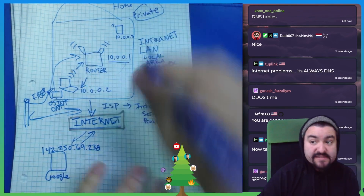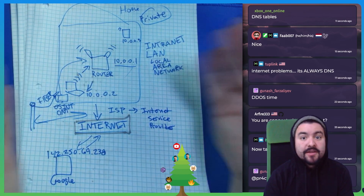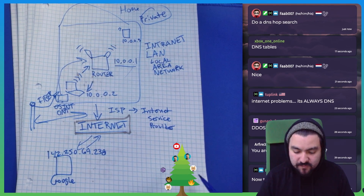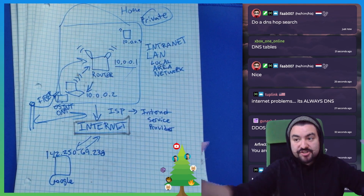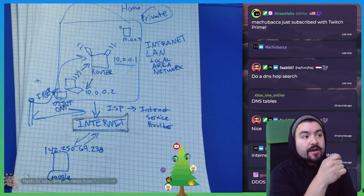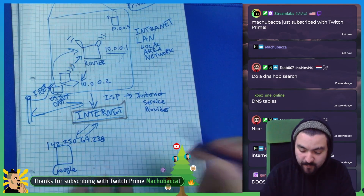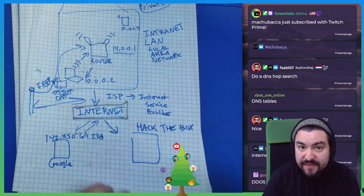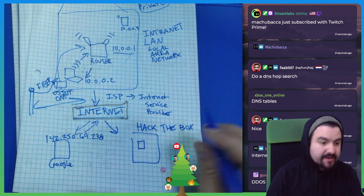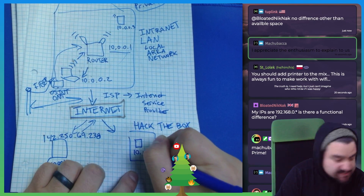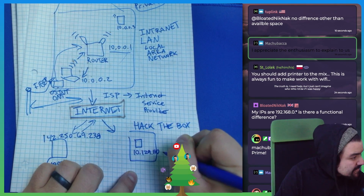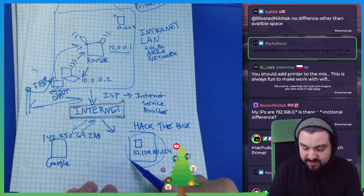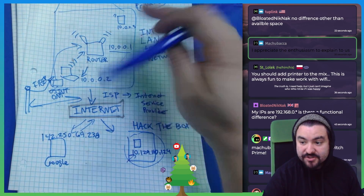This private network can exist anywhere. My house has a private network, your house probably does too, and companies in buildings have private networks as well. The internet is basically a collection of private networks. For us, when we're trying to do our hacking, we're specifically connecting to Hack the Box. Their machine is spun up within their own local private network, and the IP address they gave me is a 10-dot address: 10.129.110.124. Any machine on Hack the Box's internal network could access it, but because it's private, my computers don't have access.